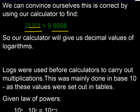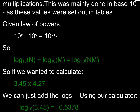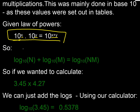Given the law of powers we know from before: if we've got 10 to the power x times 10 to the power y, then the result is 10 to the power x plus y — we can just add the indices together.